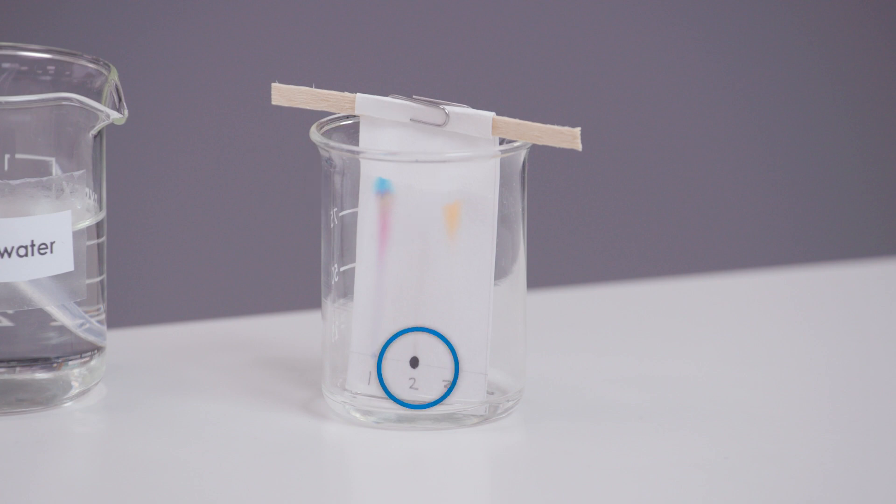Sample two didn't separate and is still on the origin line. This is because sample two is insoluble in water so we don't know if it's pure or impure.